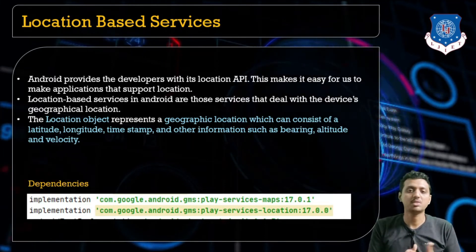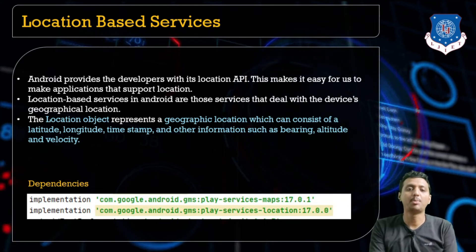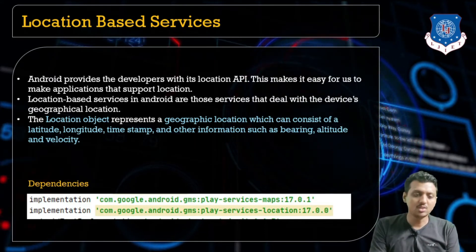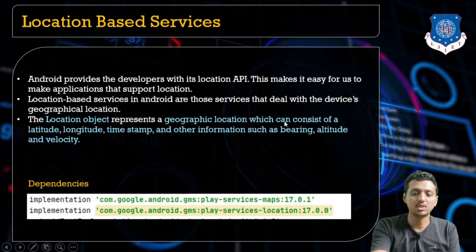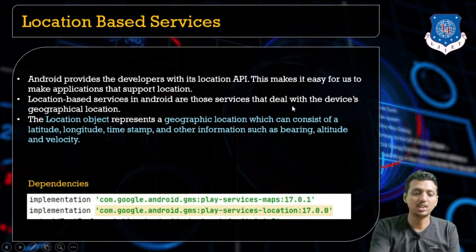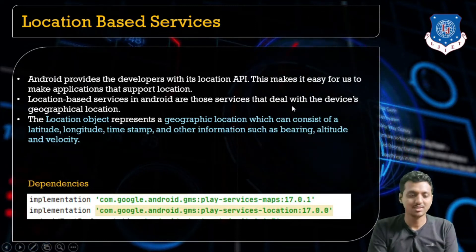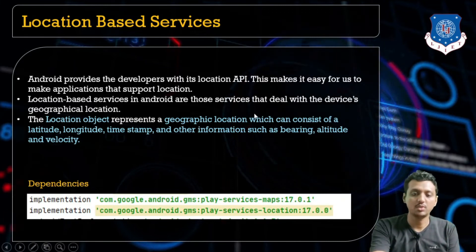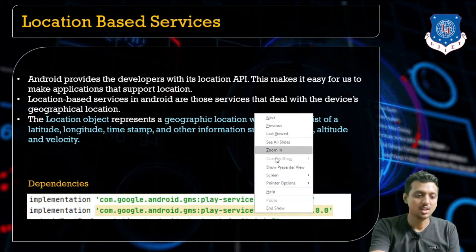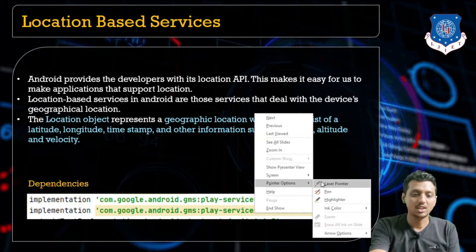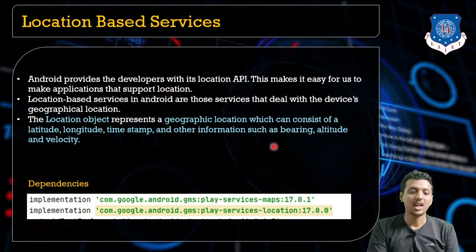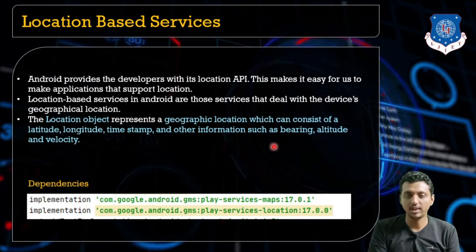All of these things can happen with the help of location-based services. Location-based services in Android are those services that deal with the device's geographical location. The location object represents the geographical location, which consists of a latitude, longitude, a timestamp, and other information like bearing, altitude, and velocity.